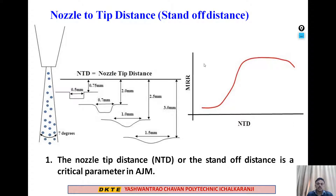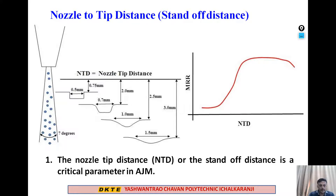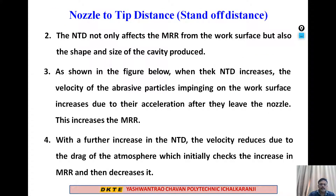The next parameter is standoff distance. Standoff distance is the distance between the nozzle tip and the workpiece. This is a very critical parameter of abrasive jet machining. It not only affects the material removal rate from the work surface but also the shape and size of the cavity produced.